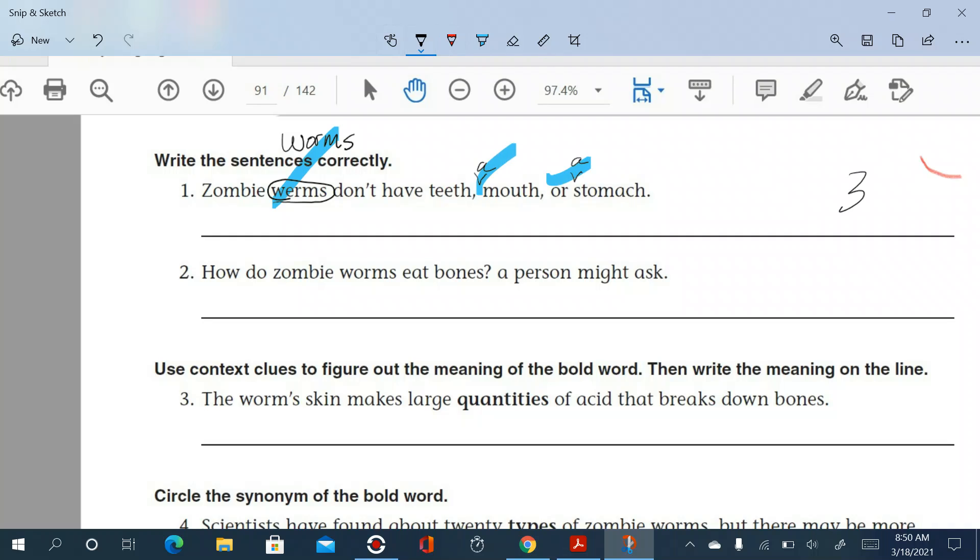How do zombie worms eat bones? A person might ask. Well, if they were asking that, where's the tagline right here? It's right here. A person might ask. So, we need to have what on this, over the speaking part, this part that's being spoken out loud, or being asked. We need to have quotation marks. How do zombie worms eat bones? A person might ask. There it is. I think that's it. So, there's your correction right there.